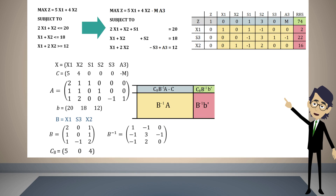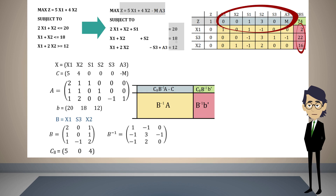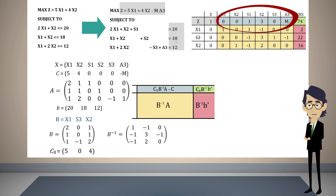Sensitivity analysis is related to the changes in this table when some of the values in the original problem change. In particular, the sensitivity analysis reports of different software packages tend to show us the changes in the final table when the objective function changes or when the resources column changes. Always remember that the values on the right-hand side of the table and the values on the top row must be non-negative. The right-hand side values represent the values of the variables in the solution, and by definition the variables must be greater than or equal to zero. Moreover, if there were negative values on the top row, it would mean we have not reached the optimal solution.